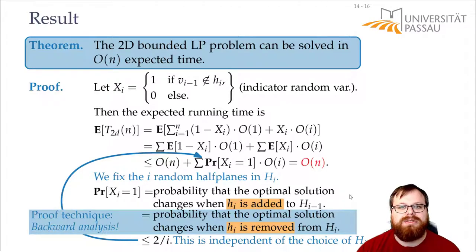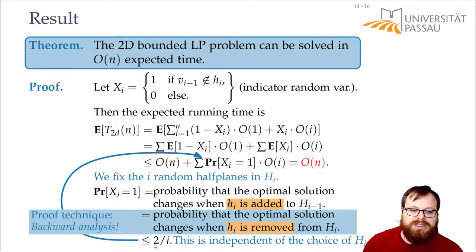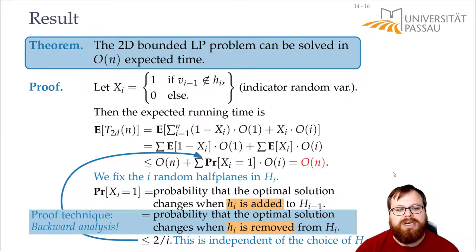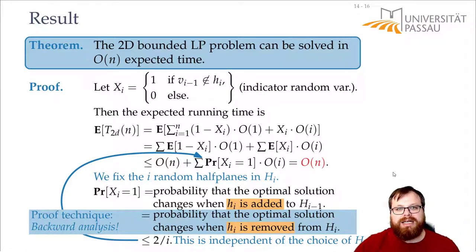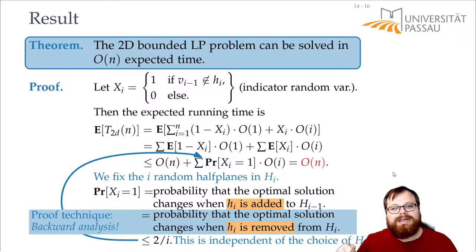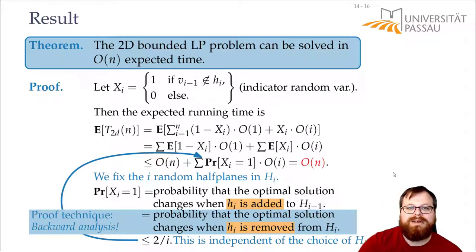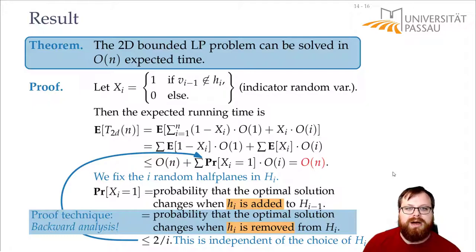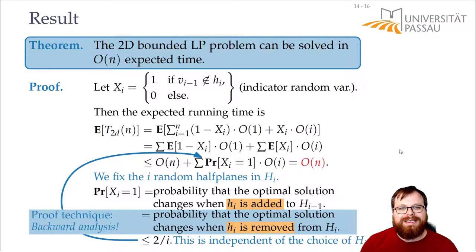The technique we used here is called backwards analysis. Instead of figuring out the probability that an event happens when you add something, you go backwards and ask: what's the probability this event happens if I remove it? That way you can figure out the probability, and it's a very strong proof technique used all the time with randomized algorithms. While it's a bit counterintuitive at first, try to draw a convex region for yourself: pick a random half plane, and only if the optimum lies on its boundary did the solution change in the step before.